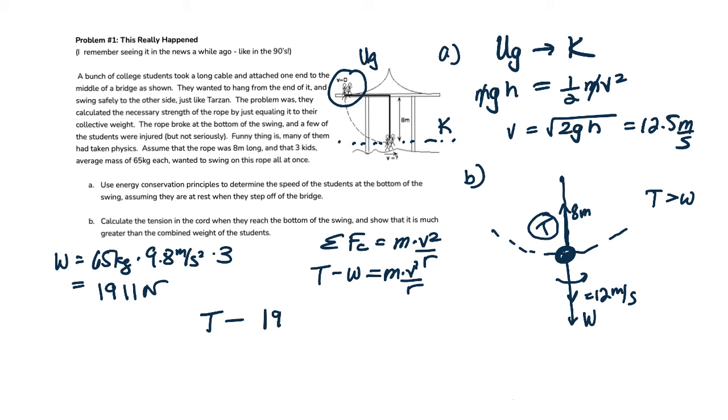Tension minus 1,911 newtons is equal to the mass, which is 65 times 3, 195 kilograms, times the velocity squared, which is 12.5 meters per second squared, divided by the radius, which is 8 meters.